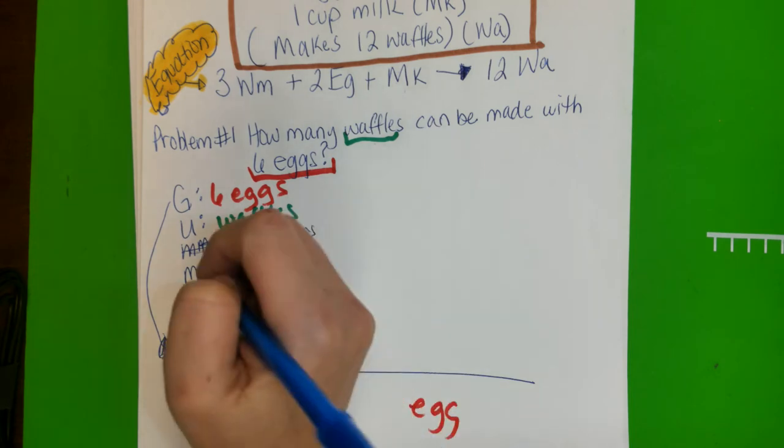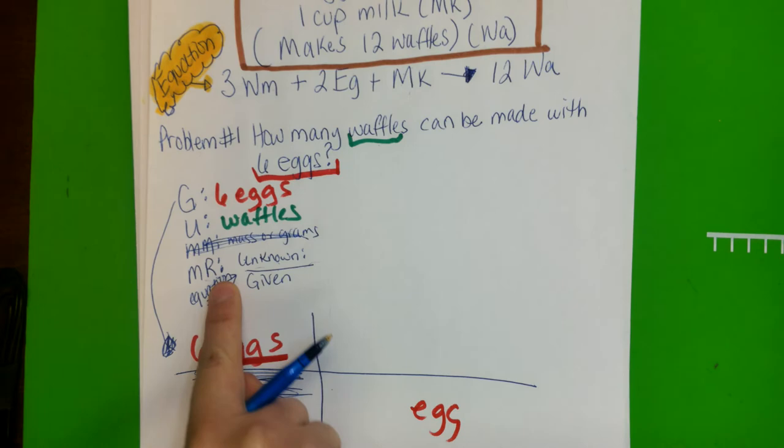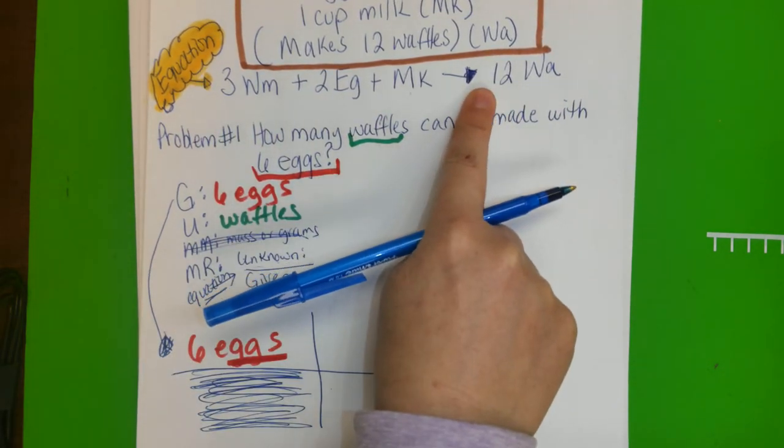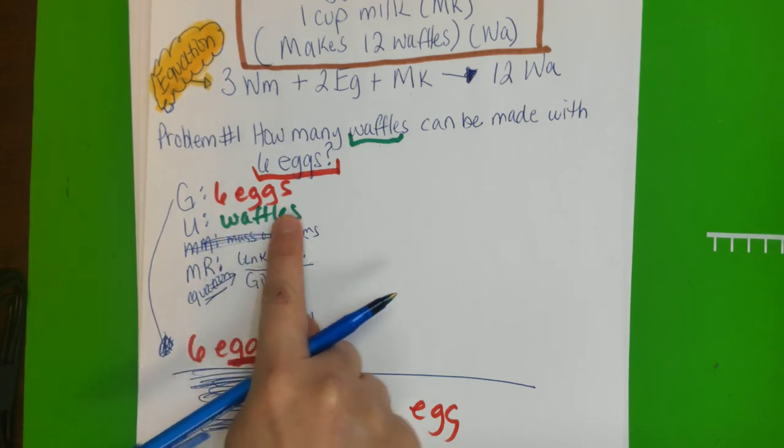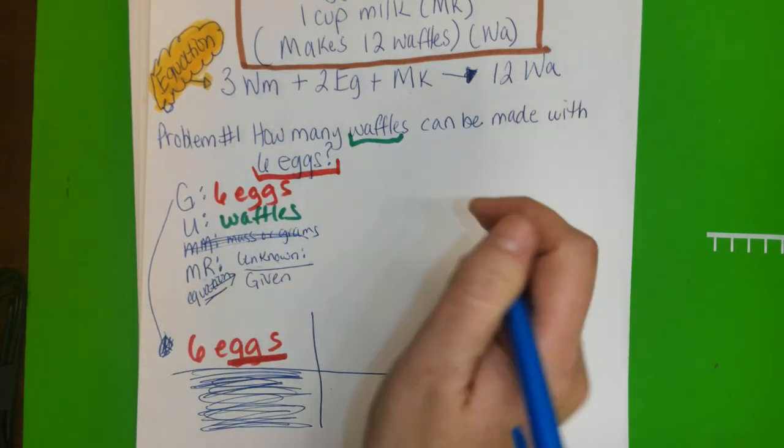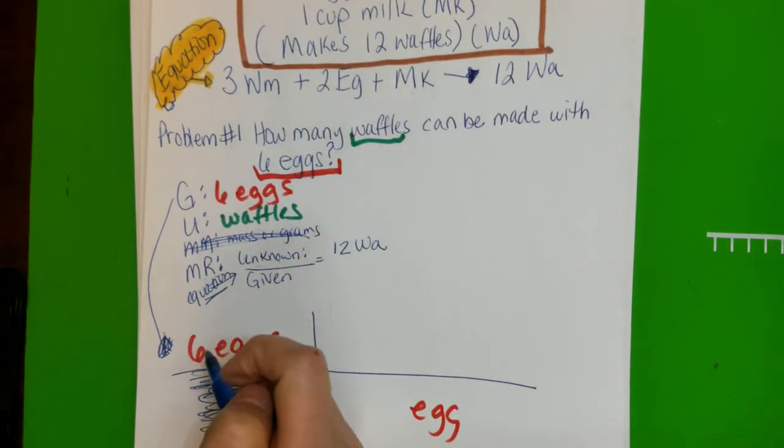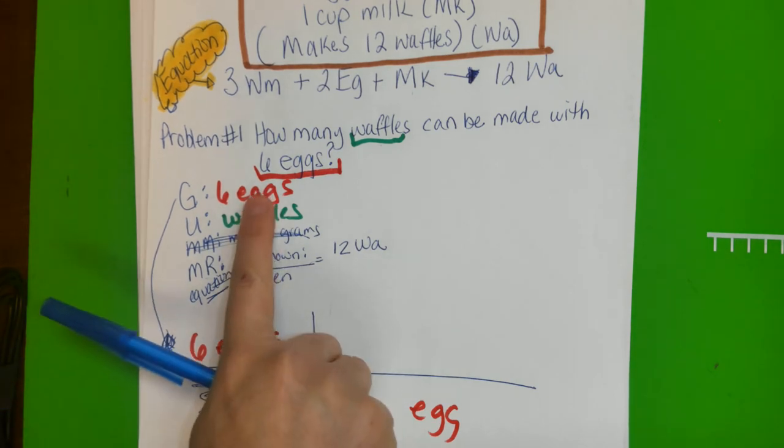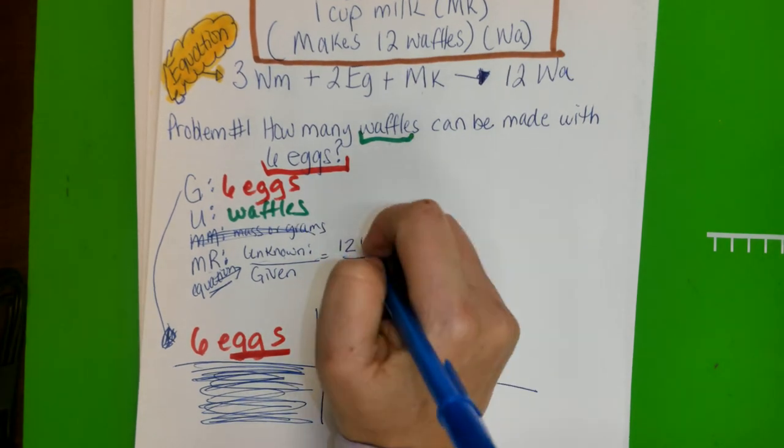Again, this is based on the equation, so you use the equation to know the mole ratio. Always, mole ratio is based on the equation. Okay, so the unknown again is your waffles. So where's the waffles? So where's the waffles? Waffles is 12, 12 waffles. Okay, so again, and the given is eggs, so the eggs would be two eggs.